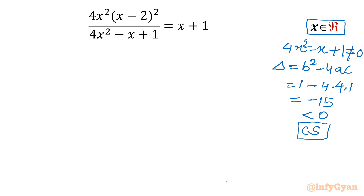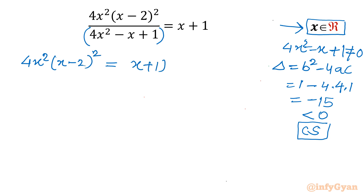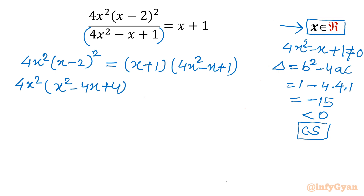Now I will multiply both sides by the denominator 4x² minus x plus 1. The equation becomes (x minus 2)² equal to (x plus 1)(4x² minus x plus 1). Let's expand using the identity a minus b whole square: a² minus 2ab plus b². On the right, taking the product gives 4x³ minus x² plus x plus 4x² minus x plus 1.